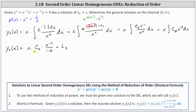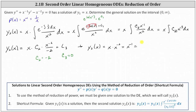Meaning we can select any value for c sub two and c sub three. To use the simplest function for y sub two of x, let's let c sub three equal zero and c sub two equal negative two. In that case, y two of x is just x times x to the power of negative two, or x to the power of negative one, or one over x.